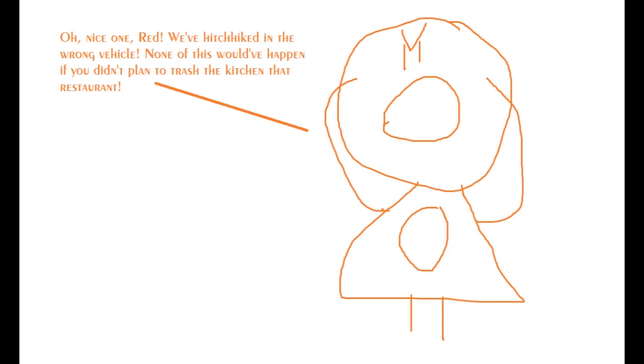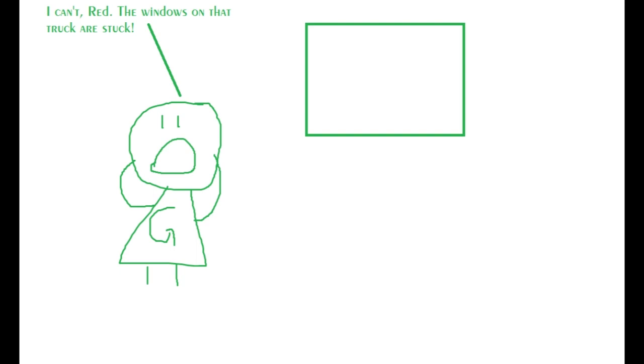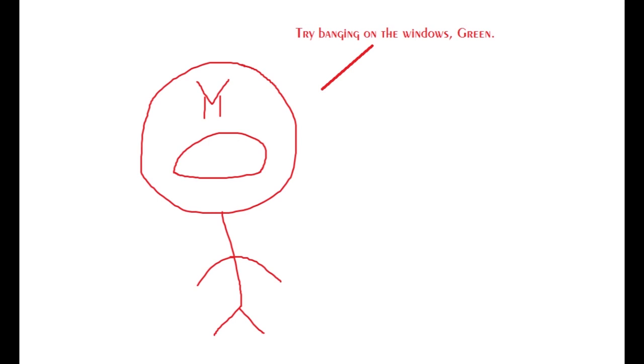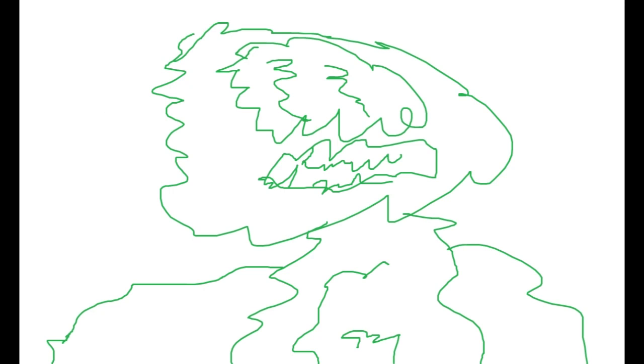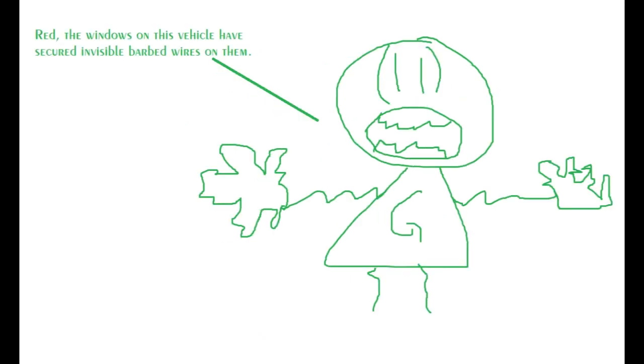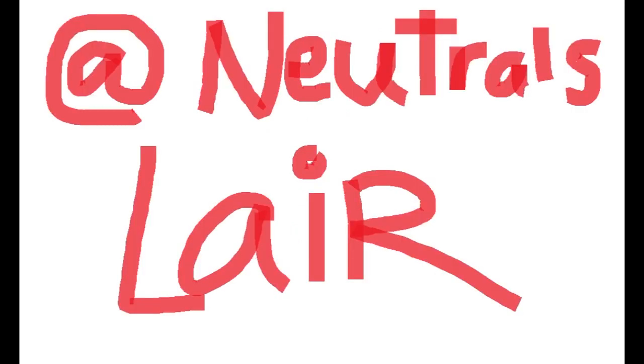Alright, I deserve this, but we need to get out of this truck. Green, call the police. I can't, Red. The windows on that truck are stuck. Try banging on the windows, Green. Help, police, we need you immediately. Red, the windows on this vehicle have secured invisible barbed wires on them. Great, now we're stuck in this never escaping truck until Tuff Black stops at his lair, that's a neutral slayer.